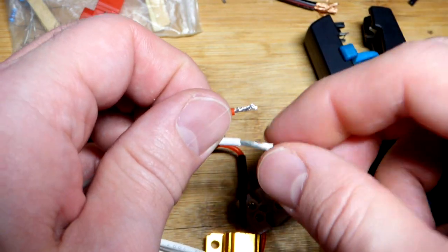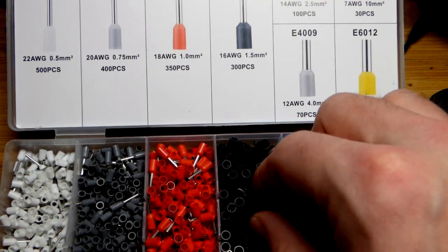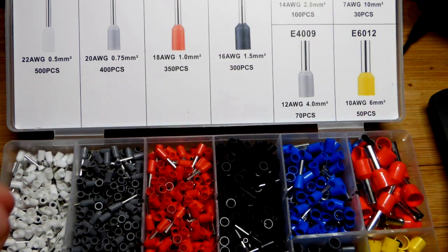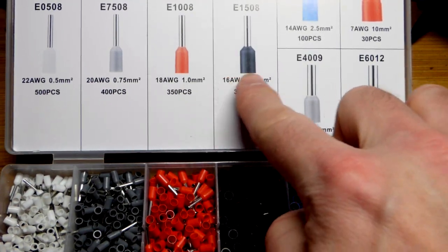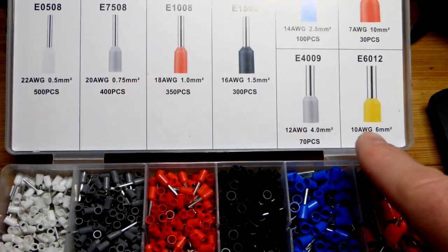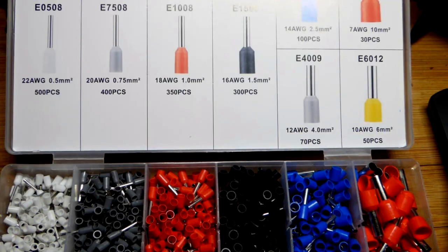So now here's my container with the ferrules and the kit here also came with the crimping tool. It was packaged separately, but yeah, there you can see the size with the colors. There's two that are I think the same color, but one's a whole lot larger than the other one, it's not hard to confuse them.